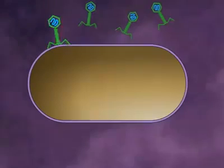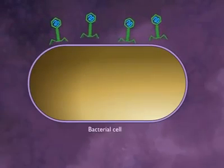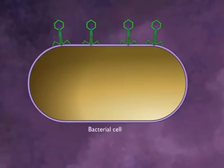When phage infect bacteria, they attach to the surface of the bacterium and inject the DNA into the cell. The protein coat remains on the outside of the cell.